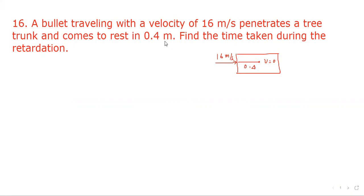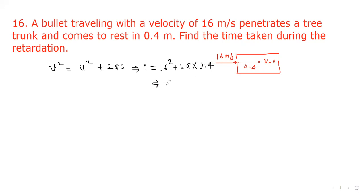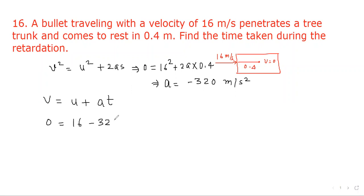We apply v² = u² + 2as. Putting values: 0 = 16² + 2 × a × 0.4, which gives a = −320 meter per second square. Now applying v = u + at: final velocity is 0, u is 16, a is −320, so t = 16/320 = 1/20 second.